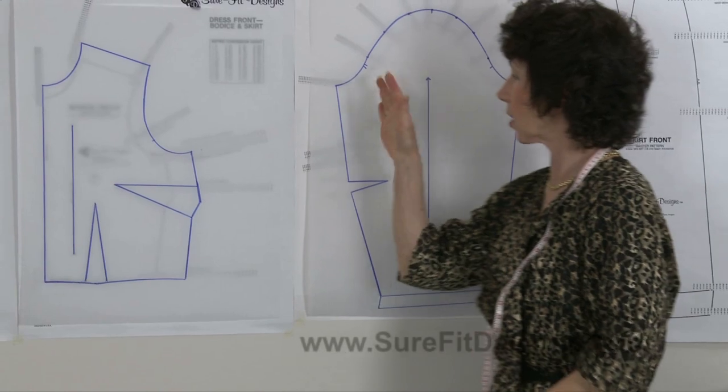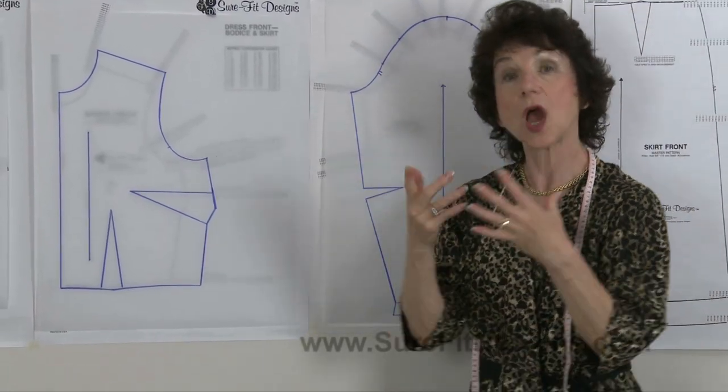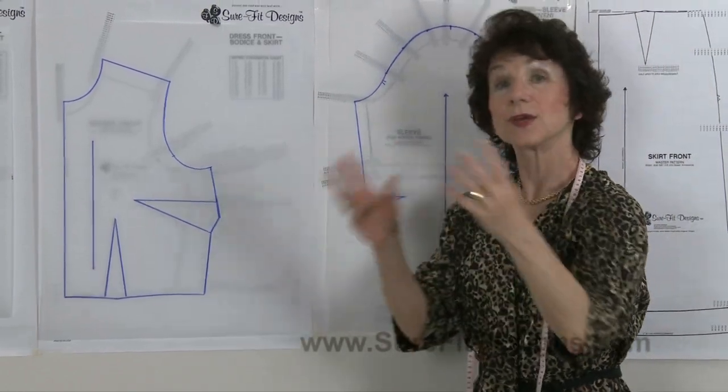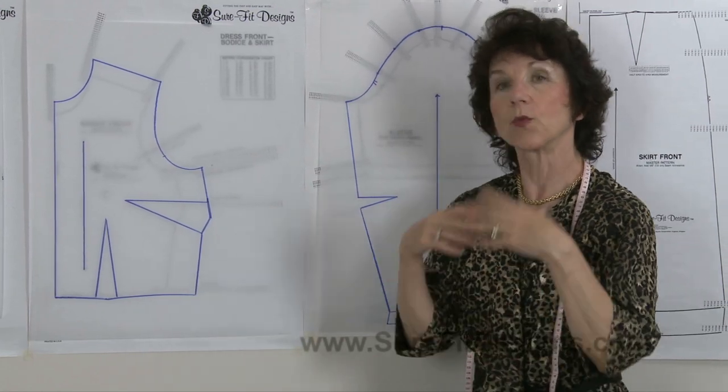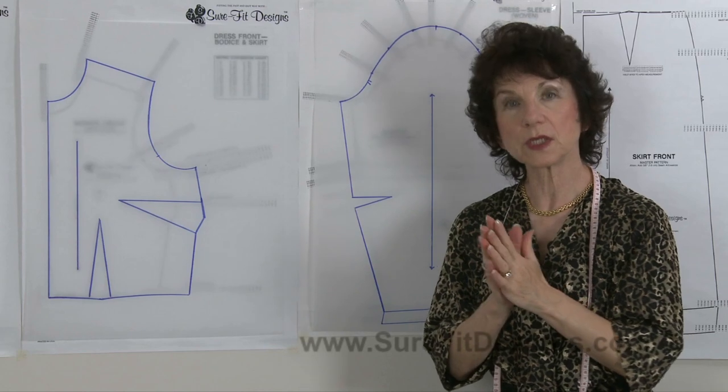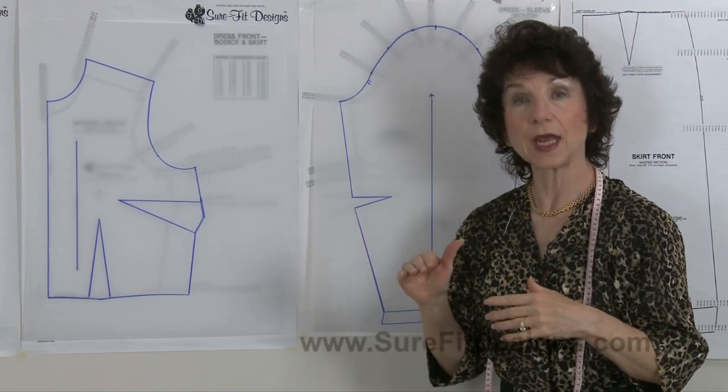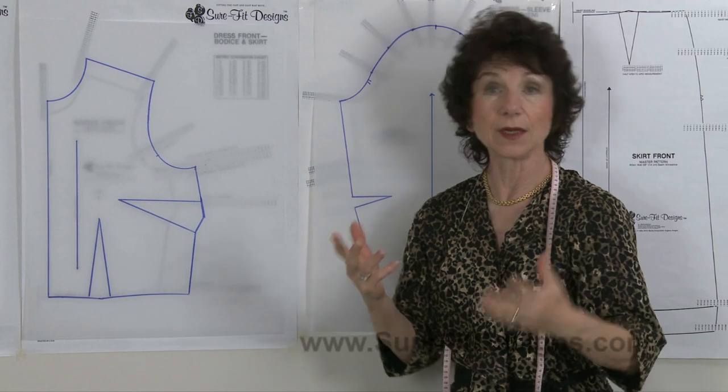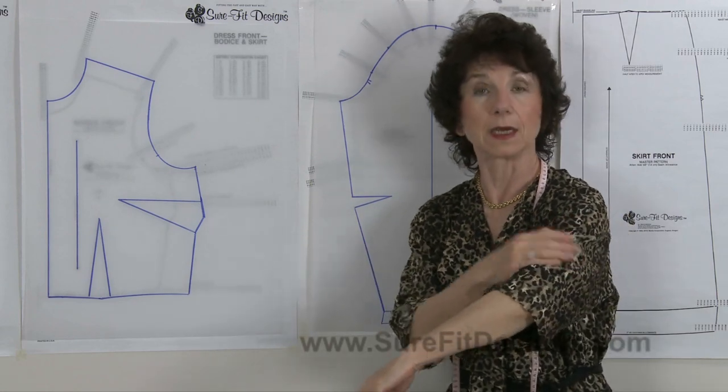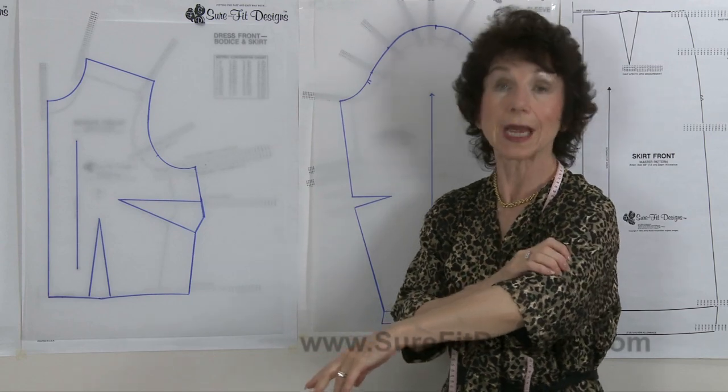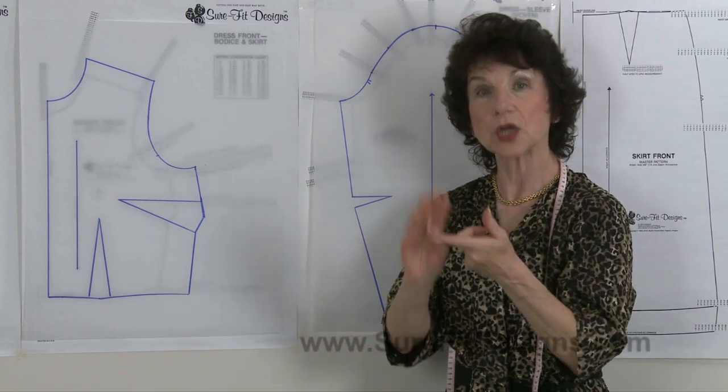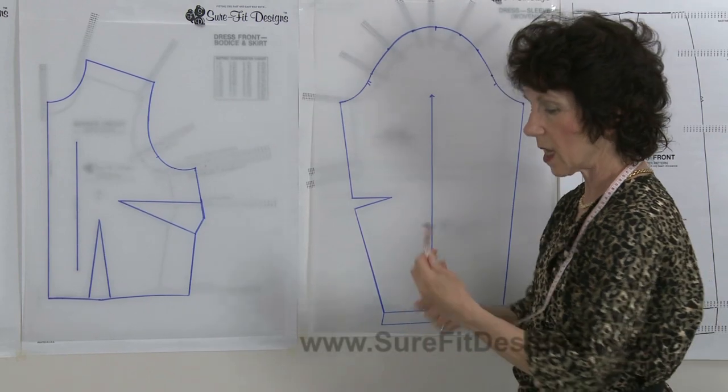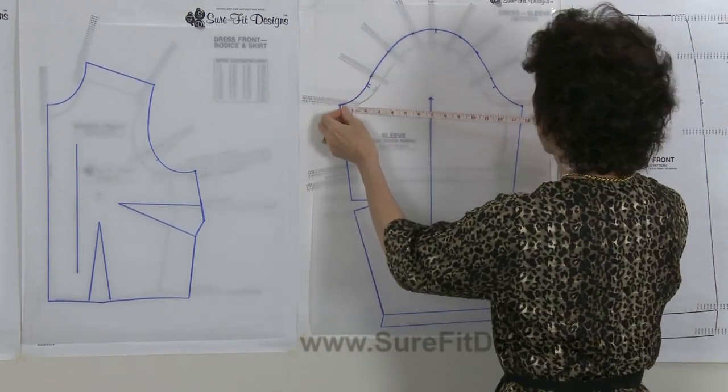But let's talk about ease in the sleeve for a moment. When you're wearing a garment, depending on the style of the sleeve, with a fitted sleeve you're likely going to be most comfortable if you have about an inch and a half to two inches of ease in your bicep area. Of course everybody is unique and different. Some of you might want it a little bit looser, some a little bit tighter, but that's personal preference.